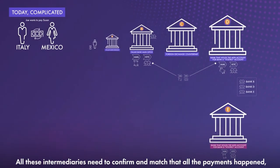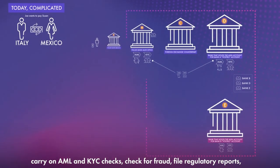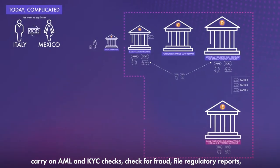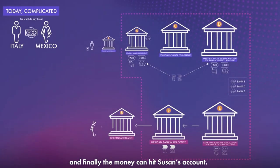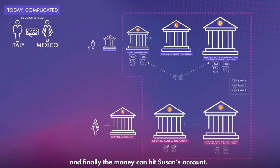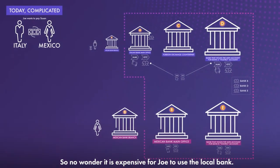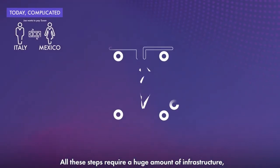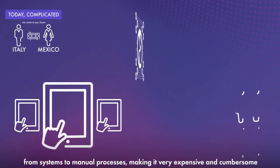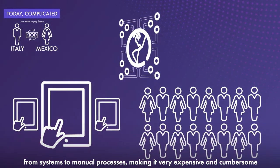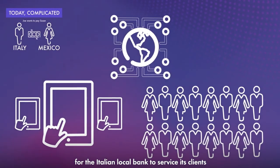All these intermediaries need to confirm and match that all the payments happened, carry on AML and KYC checks, check for fraud, file regulatory reports, and finally the money can hit Susan's account. So no wonder it is expensive for Joe to use the local bank — all these steps require a huge amount of infrastructure, from systems to manual processes, making it very expensive and cumbersome for the Italian local bank to service its clients.